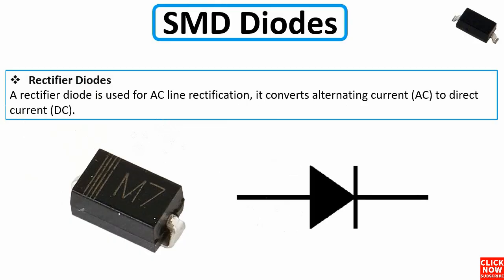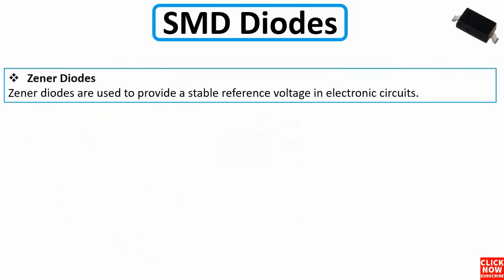A rectifier diode is used for AC line rectification — it converts alternating current (AC) to direct current (DC).